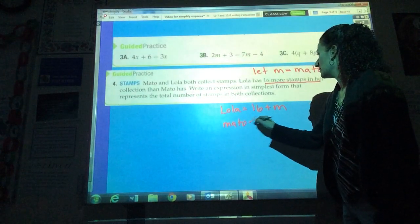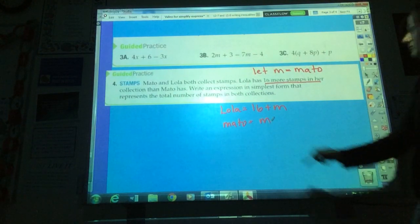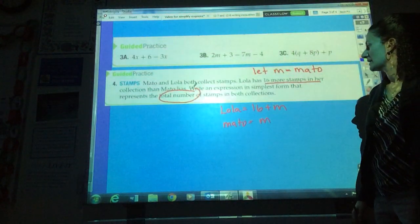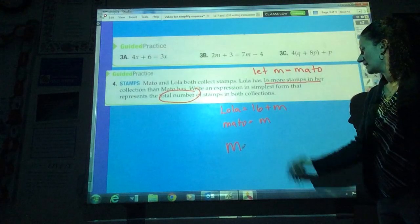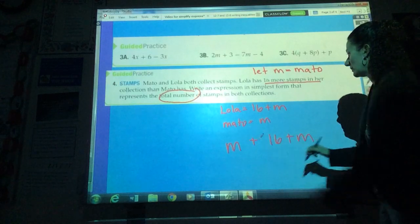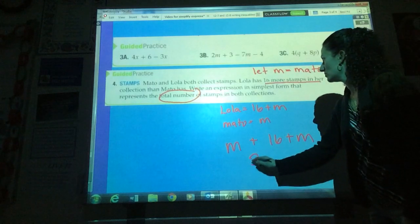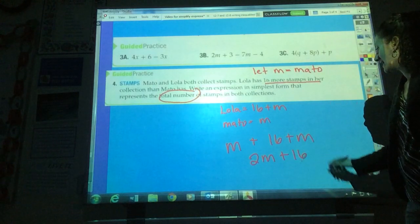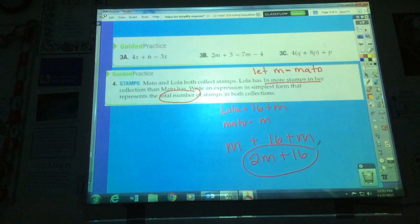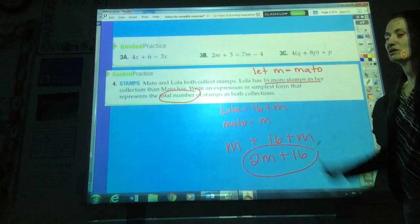I'm already letting M equal the number of stamps Meto has. So now I can try to write an expression that shows the total number of stamps for both kids. Well, I know that Meto has M. I know that Lola has 16 plus M. And if I'm trying to find the total between both, that's just adding them up. And here we have an expression that can be simplified. 1M and 1M would give me 2M plus 16. And I can't go any further because I don't know how many Meto has. I don't know how many Lola has. But I've done what was asked and I've written an expression in simplest form that represents the total number of stamps in both collections.